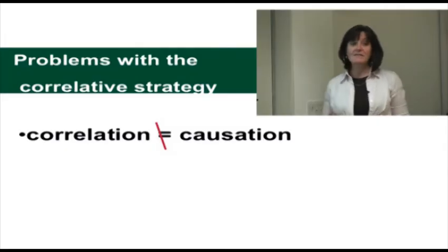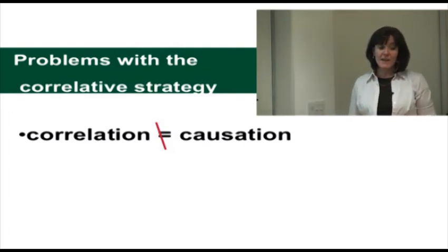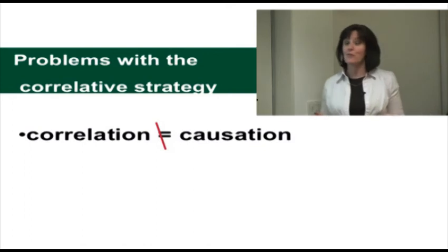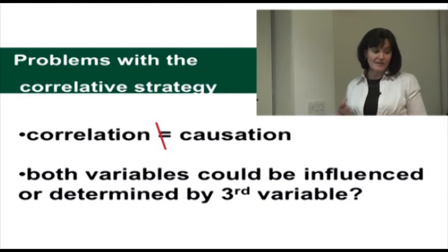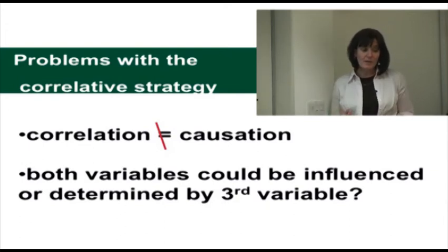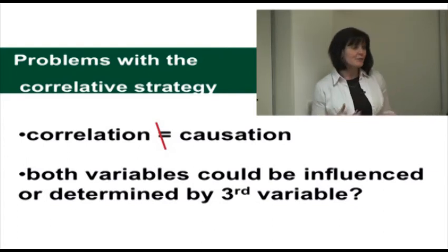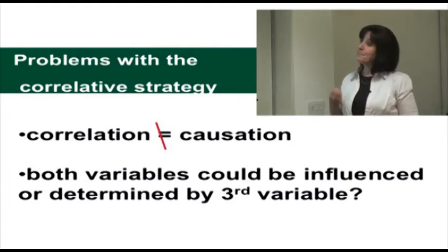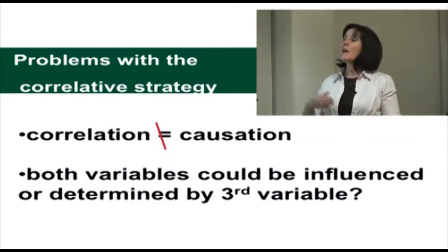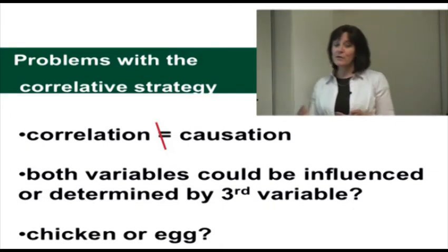One of the problems with the correlative strategy is that even if we find a correlation, we can't say that one variable causes the other. Even things like height and weight are not perfectly correlated. Although tall people tend to be heavier than short people, there are still some short, heavy people and some very tall, not so heavy people. Finding a strong and significant correlation between height and weight could still mean that both variables are influenced by a third variable — your genes and the nutrition you experienced growing up — which determined both your height and your weight. It's a bit of a chicken-or-egg situation; we also can't say which came first.